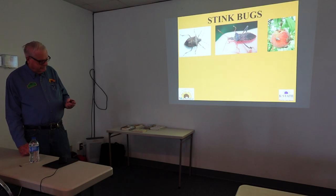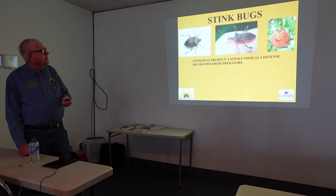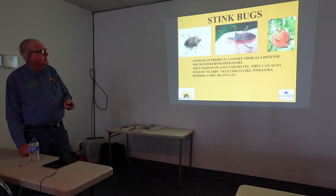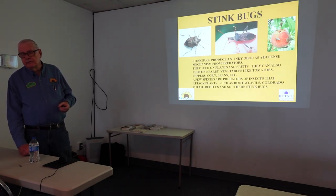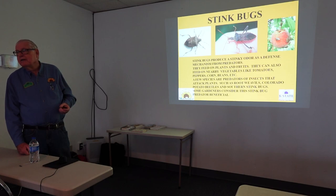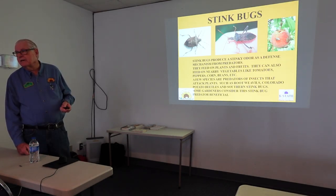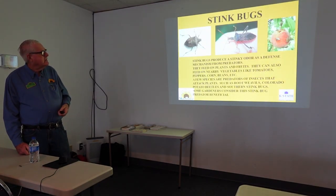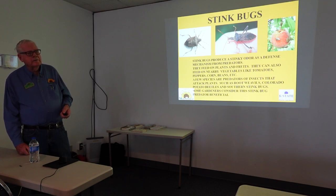Stink bugs — they're well named. Stink bugs produce a stinky odor as a defense mechanism from predators. They feed on fruit plants and fruits, and also feed on nearby vegetables like tomatoes, peppers, corn, and beans. A few species of stink bugs are actually predators of insects that attack other plants — such as root weevils, Colorado potato beetles, and southern stink bugs — so some gardeners consider the predatory stink bug beneficial. But for the most part they're on the bad side. There are different varieties or species of stink bugs, but they're all stink bugs.